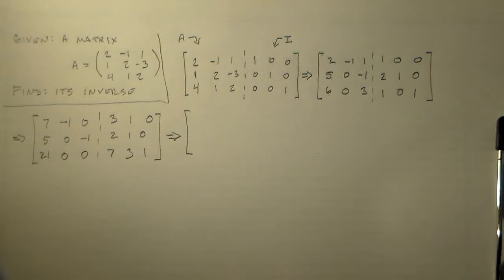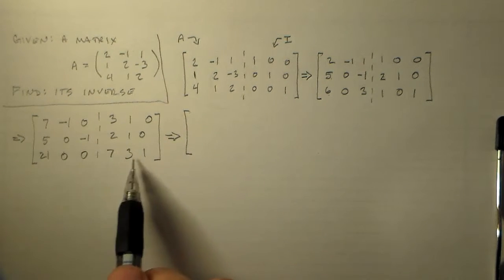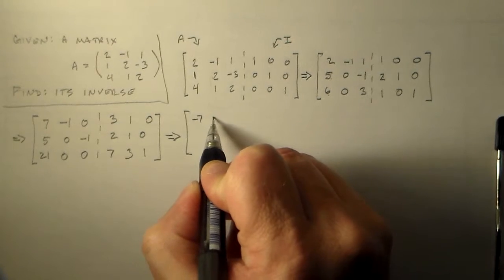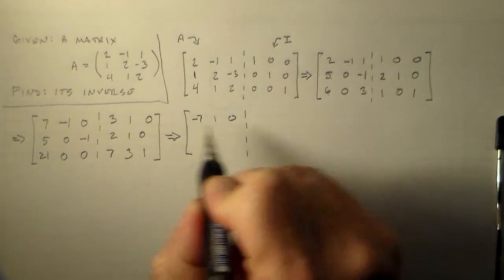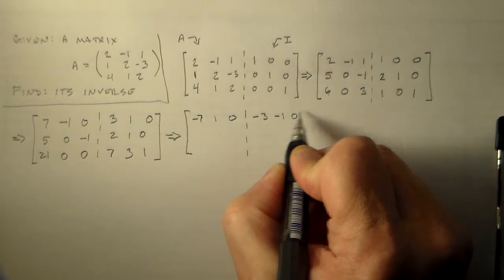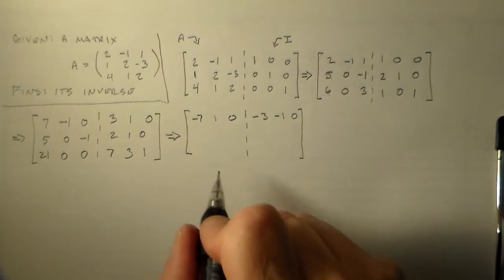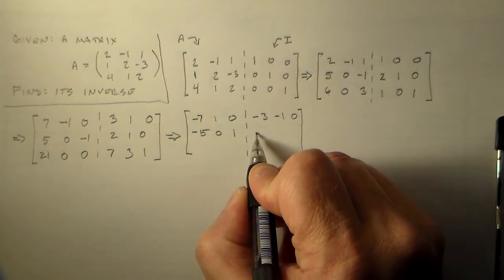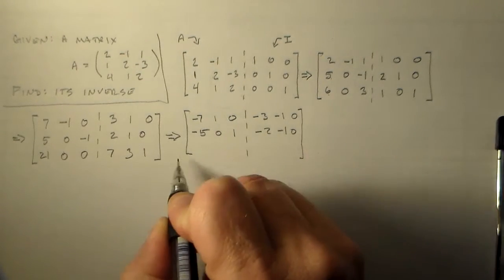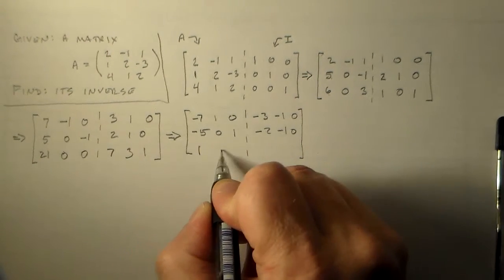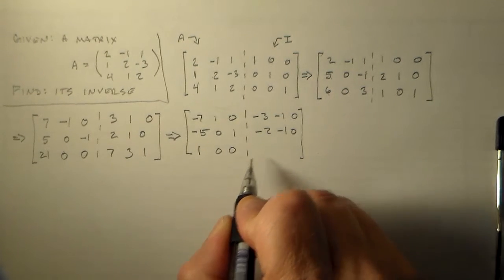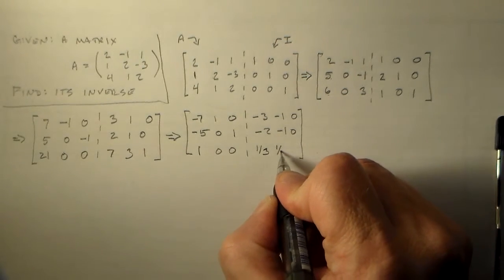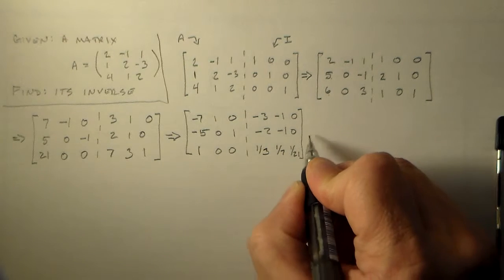So this is looking all right. Probably what we'd like to do is go ahead and multiply these two rows by minus 1 and divide this row by 21. So we have minus 7, 1, 0, minus 3, minus 1, 0. I'm just going to want this minus because it's going to be easier later on. We want the negative 1, negative 5, 0, 1, minus 2, minus 1, 0. Divide by 21, we have 1, 0, 0, 7 divided by 21 that's 1 third, 3 divided by 21 that's 1 seventh, and 1 divided by 21 that's 1 over 21. So things are looking pretty good right here.